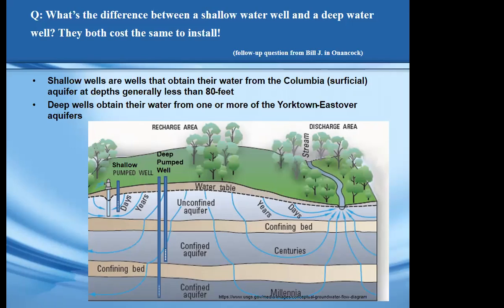In this figure it's called an unconfined aquifer because it doesn't have a clay confining bed above it, so that would be a shallow pumped well. As you can see on this graphic, the age of the water that goes into this pumped well is on the order of days to years. The Columbia aquifer is less than 300 years old, and in many cases less than 50 years old.